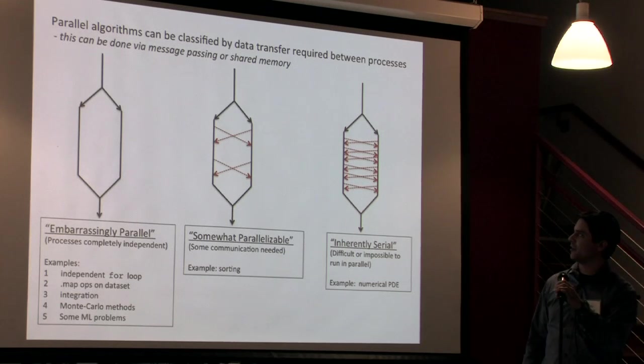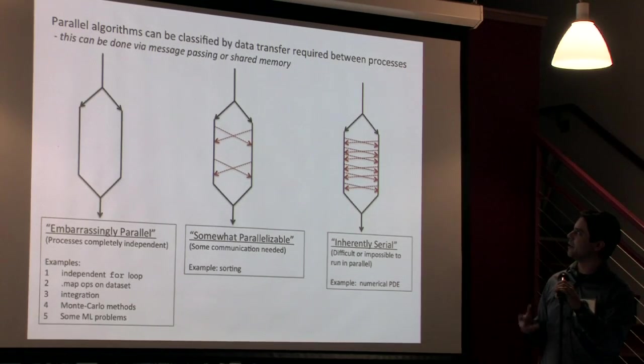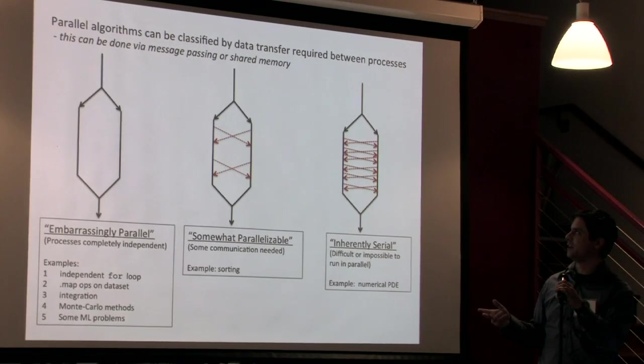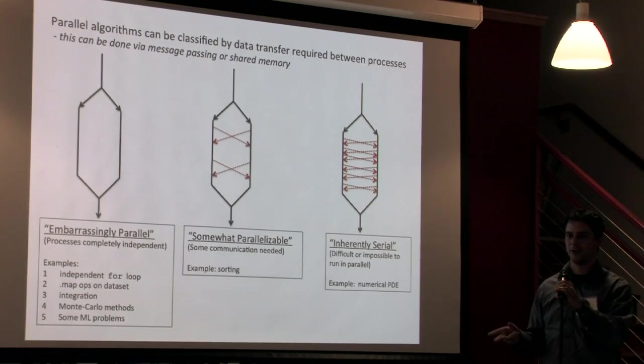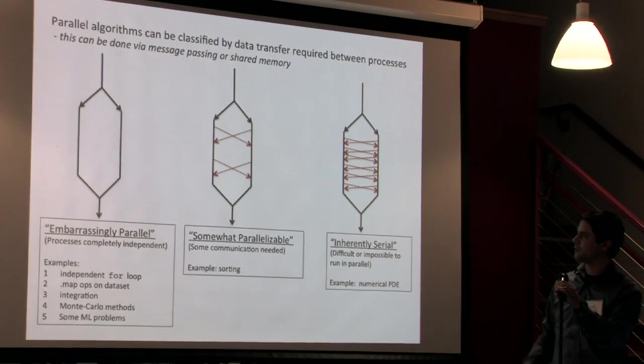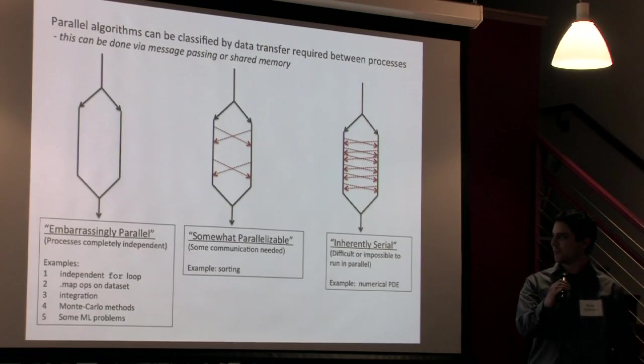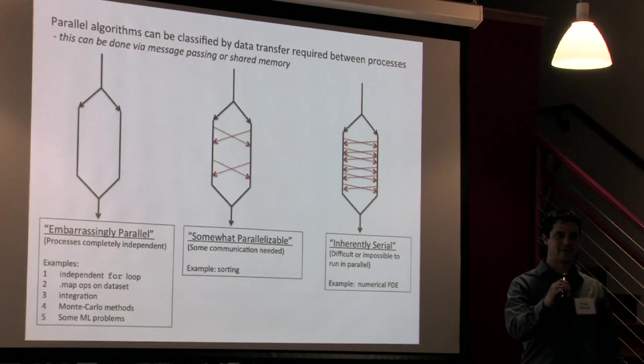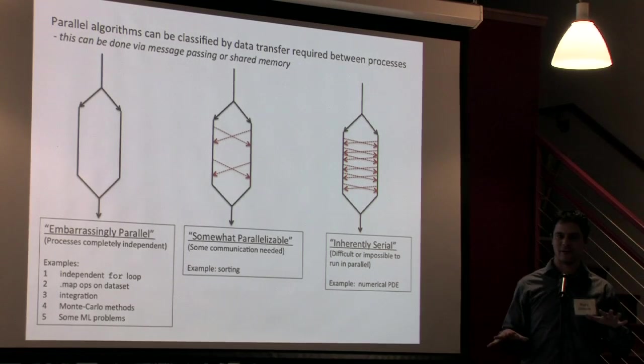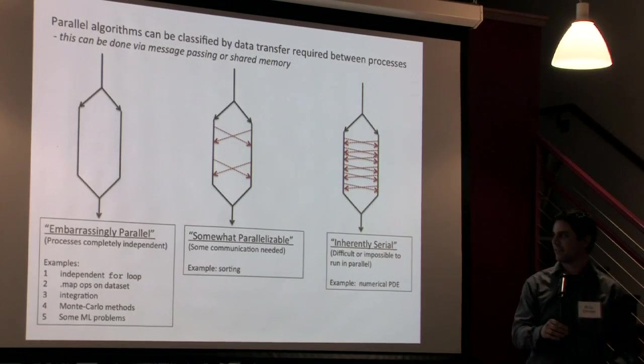So if we look at parallel algorithms we can classify them in terms of how easy they are to parallelize by the amount of data transfer that's required between them when they're running in parallel. Over on the left here we have this is just a diagram that shows you cases where you have a computation that's what we call embarrassingly parallel. This just means that you can divide a problem into n processes and those can all run independently of one another without ever having to talk to one another and the good news for us is that there are many problems that we face in analytics that fall into this category.